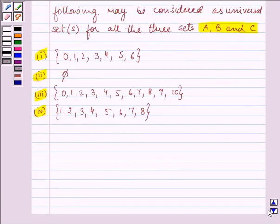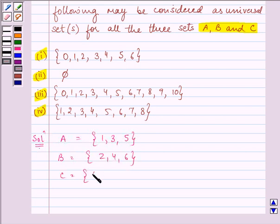So, the sets are given to us as A = {1, 3, 5}, set B as {2, 4, 6}, set C as {0, 2, 4, 6, 8}.